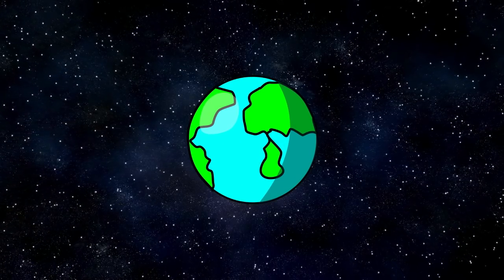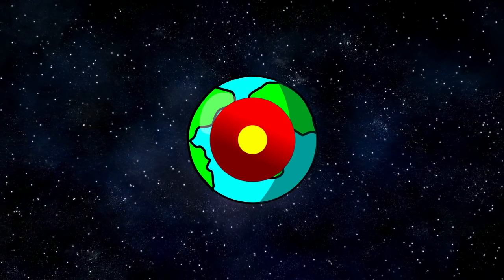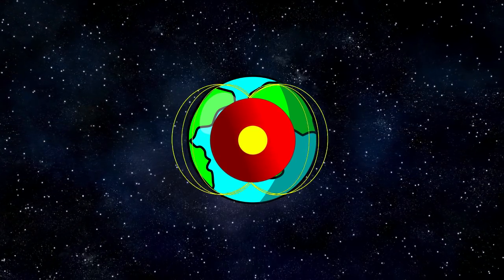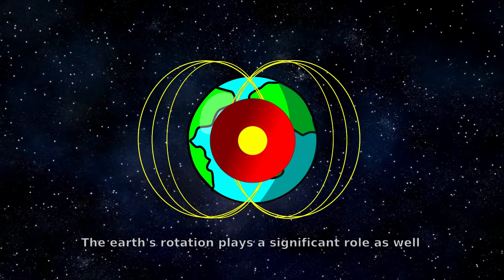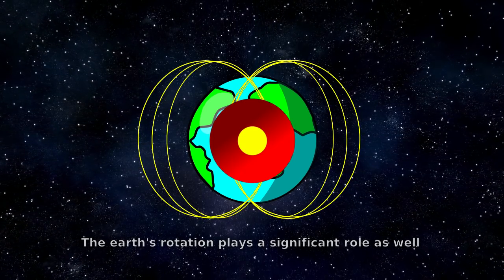The Earth's magnetic field is driven by the planet's molten iron outer core. As the electrically charged liquid flows around, it creates a magnetic field that extends out of the core and envelops the planet. It's been happening inside the Earth for 3.5 billion years.